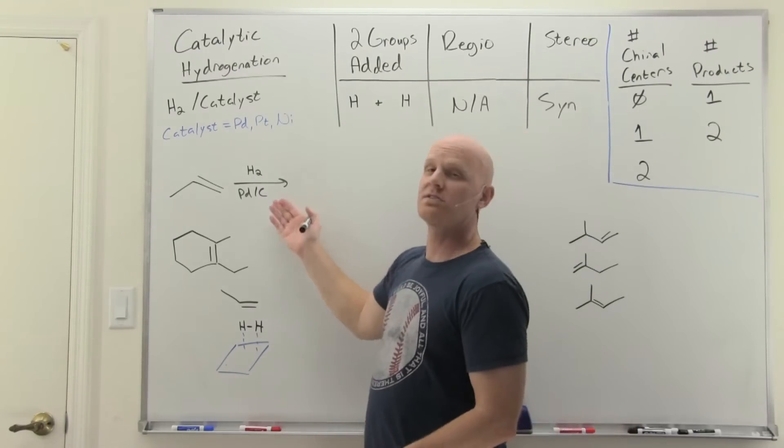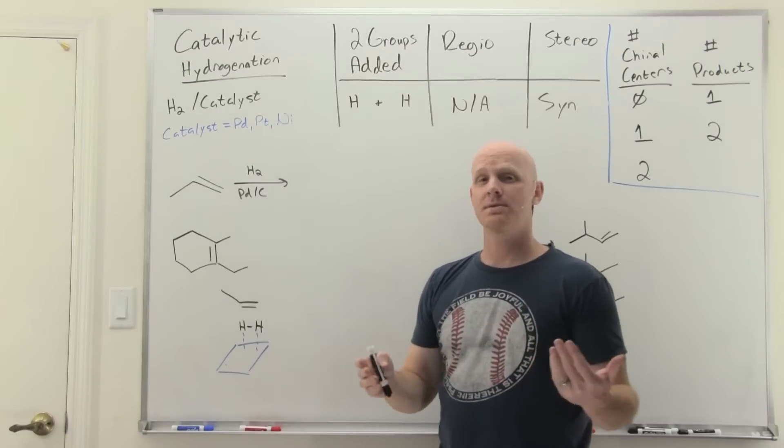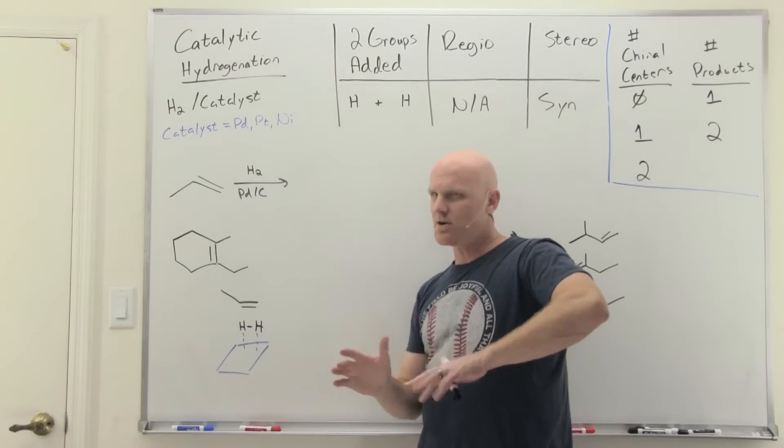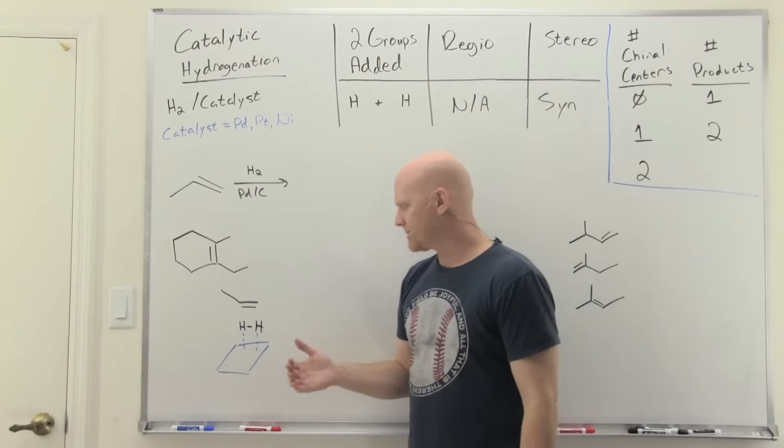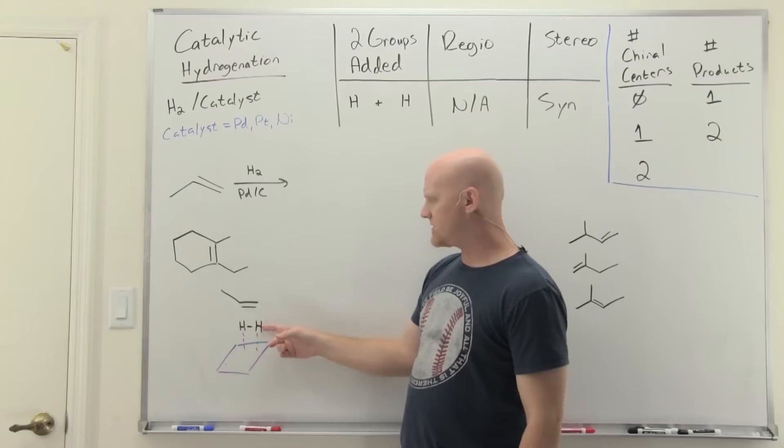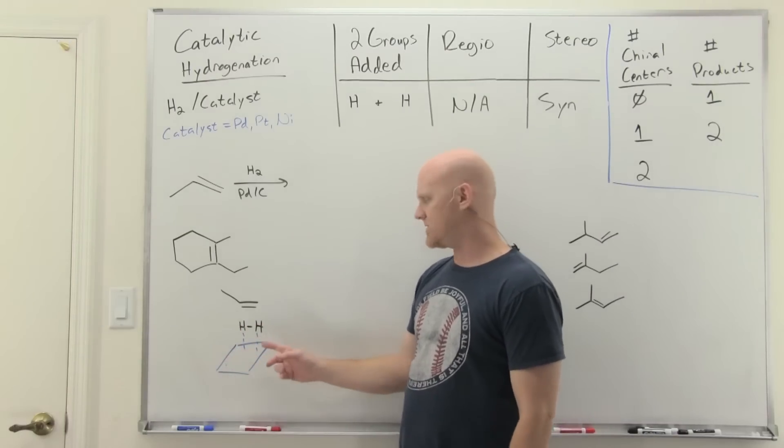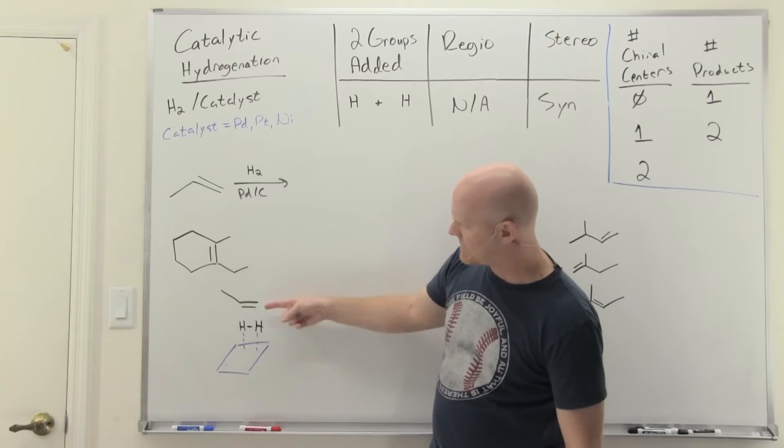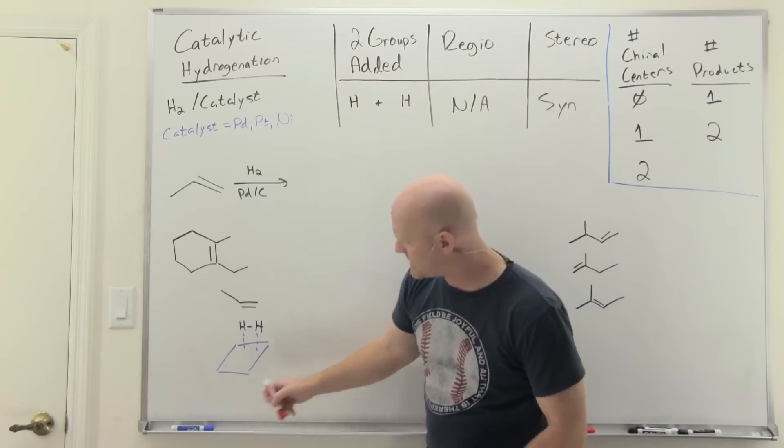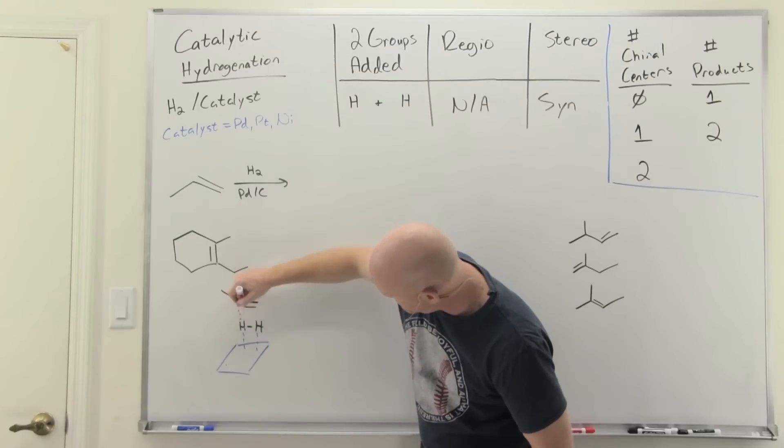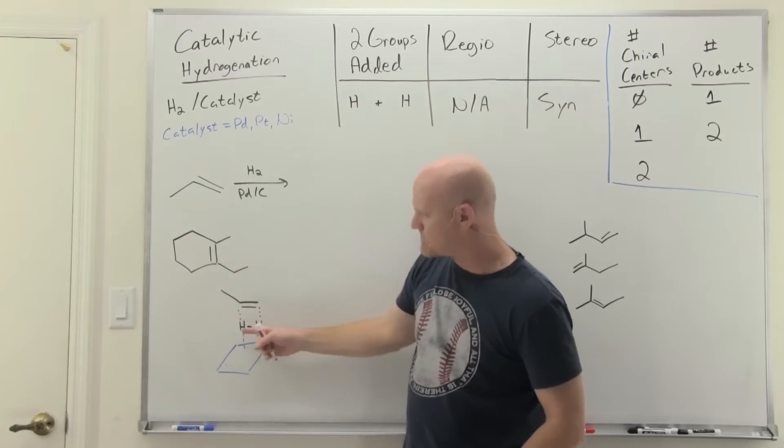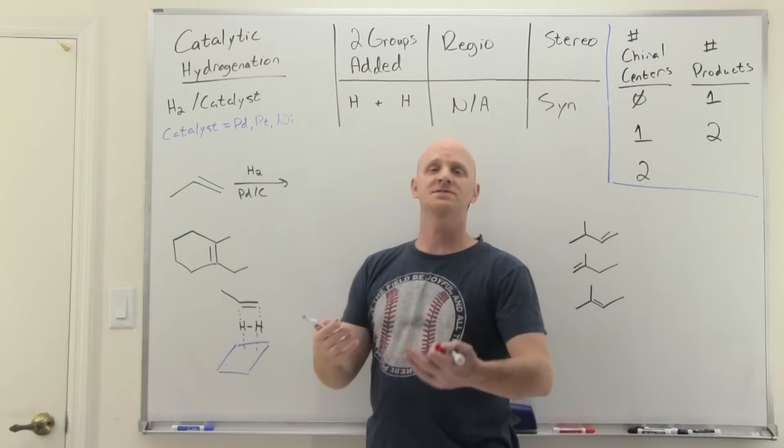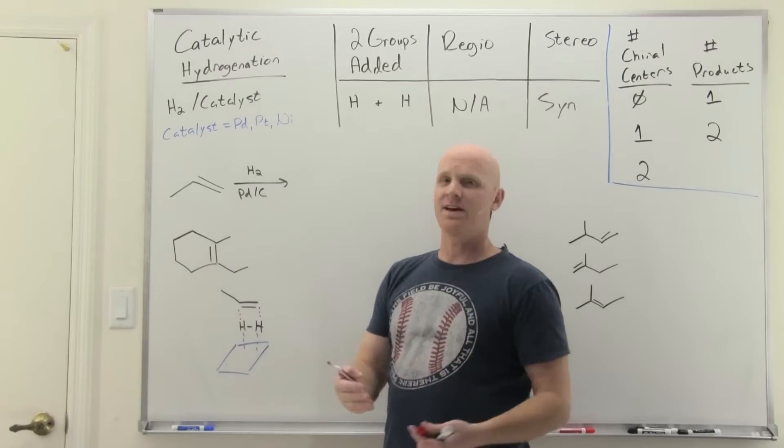So we don't exactly know the mechanism of this reaction, which is a beautiful thing, because if we don't know the mechanism, then you don't have to know the mechanism. It turns out that hydrogen is going to adsorb to the surface of one of our metal catalysts, and that weakens the hydrogen-hydrogen bond. Our alkene is going to line up to add both hydrogens at the same time from the same molecule of H2.